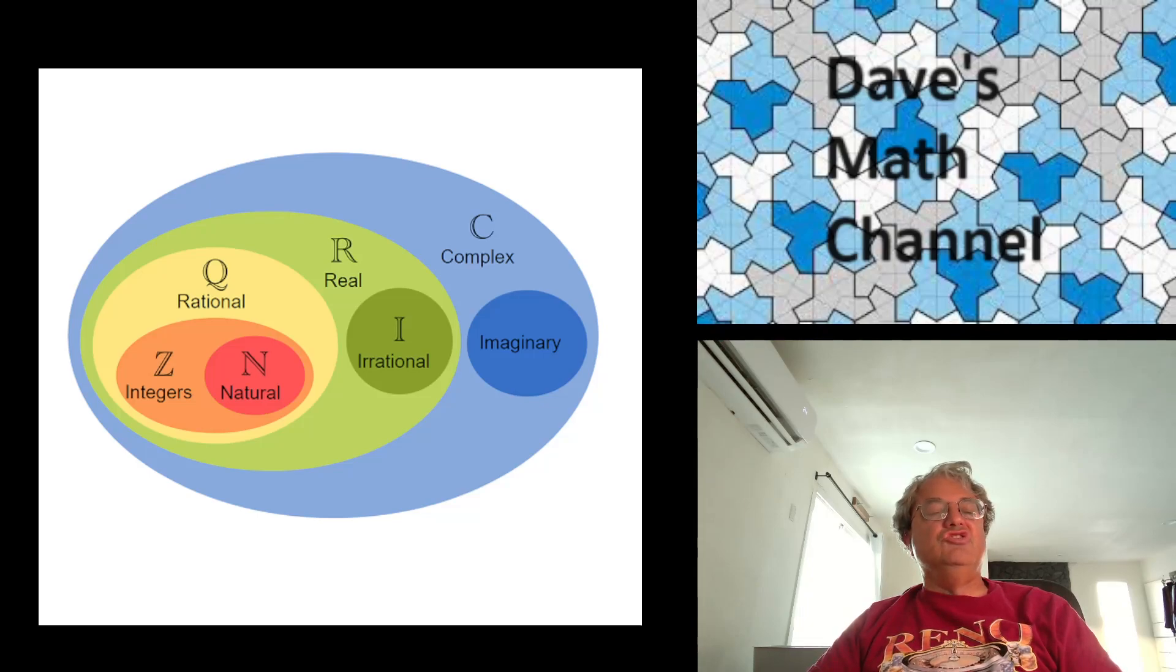Then we have the integers. Those are the ones in orange. Those include negative numbers. The ancient Greeks didn't even have 0, and they certainly didn't have negative numbers. Those weren't invented, I think, until the early Renaissance. And then you can keep going. You can find fractions, Q, the yellow oval here. Those are known as rational numbers, just ratios of integers.